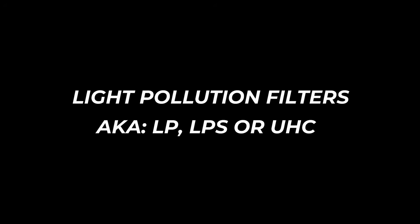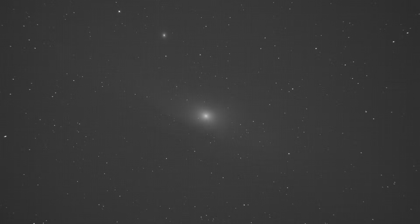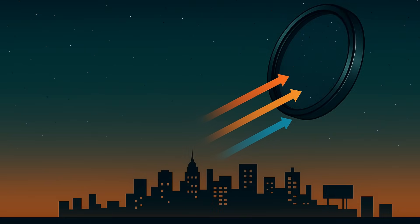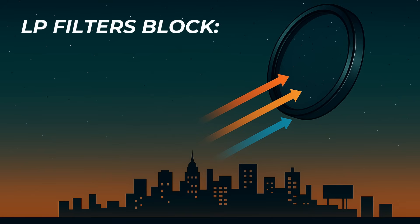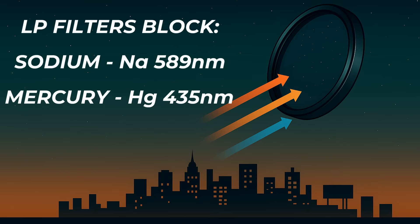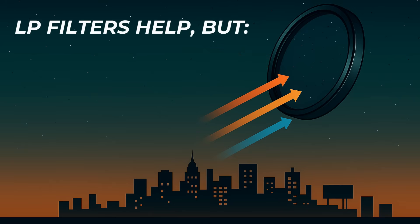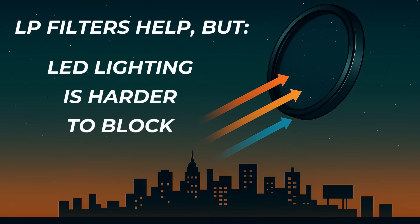Let's tackle one of the most popular filter types: light pollution filters, sometimes called LP, LPS, or UHC filters. If you're imaging from a city or suburbs, you've probably seen that nasty orange or gray glow in your subs — that's sky glow caused by street lights, LEDs, billboards, and all kinds of artificial sources. Light pollution filters work by blocking specific wavelengths of common city lights, especially sodium vapor and mercury vapor lines. What's left is a darker background and better contrast for your target. These filters aren't magic — with the ever-growing popularity of LED lighting it's getting harder to block unwanted light pollution — but they do help in most cases.